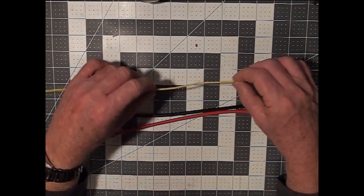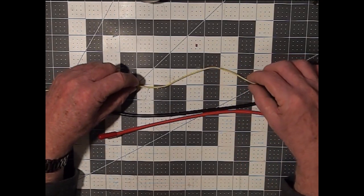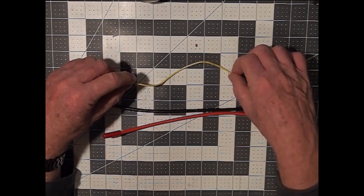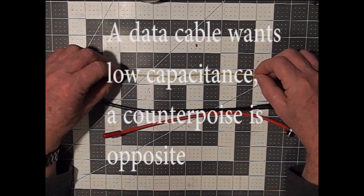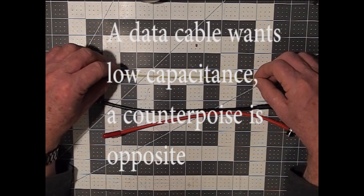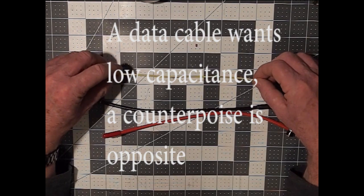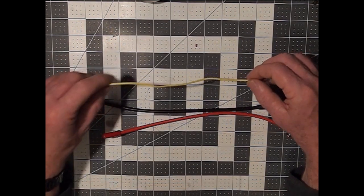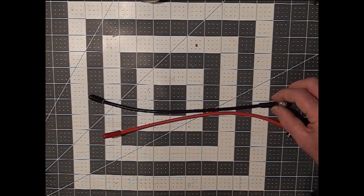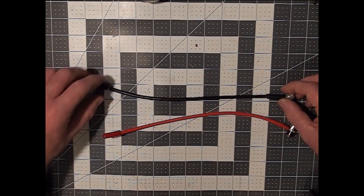However, what we know about wire and the associated gauges is the smaller the gauge, the more the resistance and therefore the less capacitance ability it has. So it would make sense to go to the largest gauge wire that's practical.